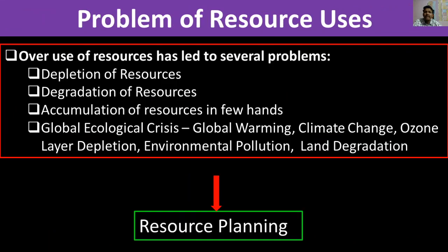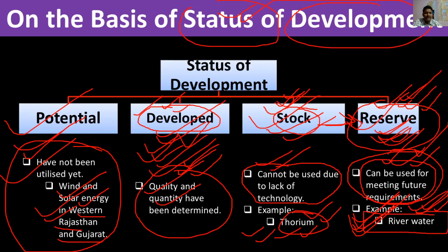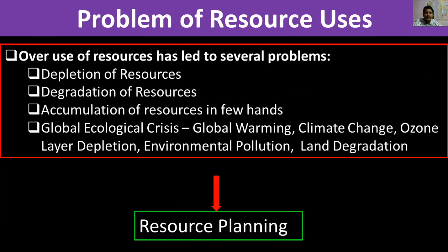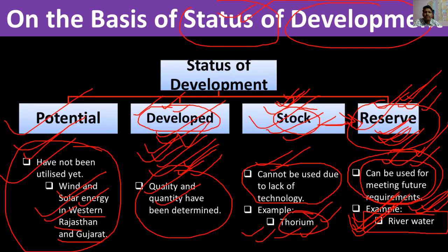So these are the types of resources on the basis of a few criteria. In the next video, we will discuss the problems of resource use, resource planning — what resource planning is, why it is needed, and what problems arise in resource use. See you in the next video.